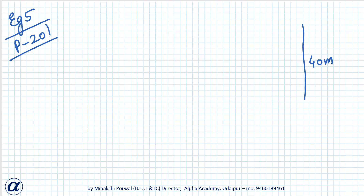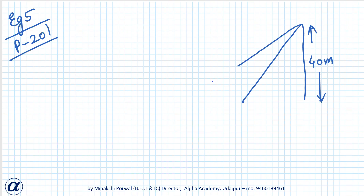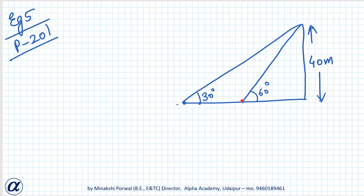Shadow was observed when sun's altitude was 30 degrees and sun's altitude was 60 degrees. This is 30 degrees and this is 60 degrees. And it was found that when altitude was 30 degrees, the shadow was longer by 40 meters. So when it is 30 degrees the shadow is longer, and when it is 60 degrees the shadow is shorter — this difference is 40 meters.